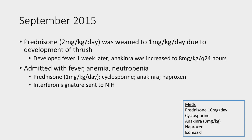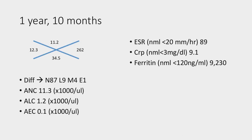A month after that, she was seen as an outpatient and then subsequently admitted. She was on high-level steroid — two per kilo per day — and developed thrush. We tried to drop it to one milligram per kilogram per day, but after that the fever recurred fairly quickly. We increased the anakinra to eight milligrams per kilogram every 24 hours. She was admitted with fever, anemia, and neutropenia. At this time, we started having a discussion with the people at the NIH and sent the interferon signature, which is what they were studying at that point.